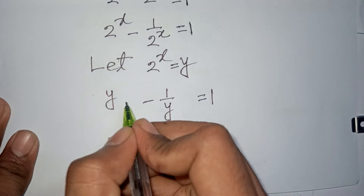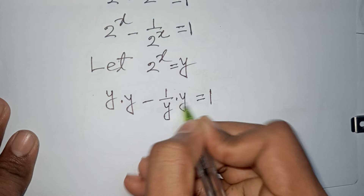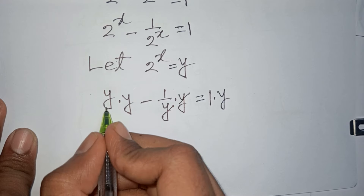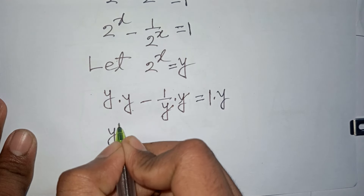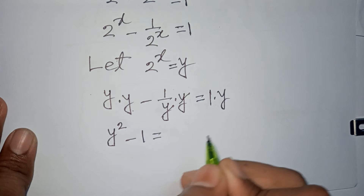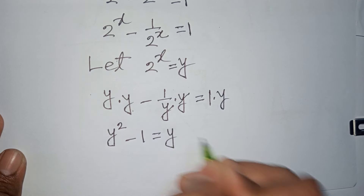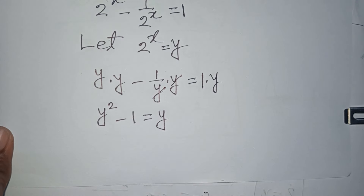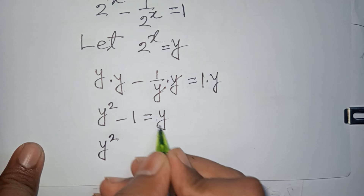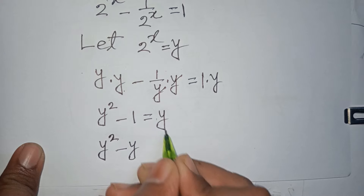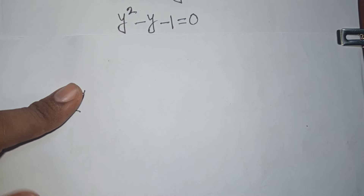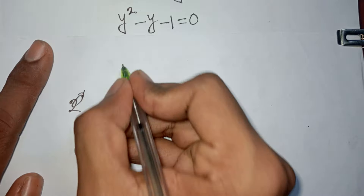Multiplying both sides by y, the 1/y cancels, giving y squared minus 1 equals y. Rearranging, we get y squared minus y minus 1 equals 0.